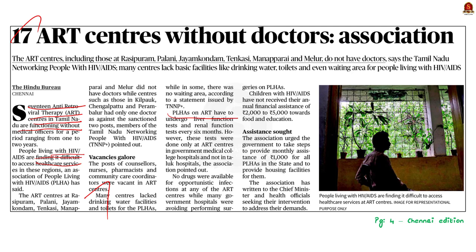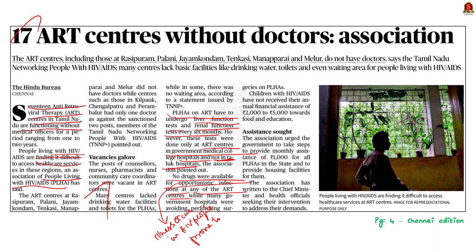People living with HIV or AIDS (PLHA) have to undergo liver function tests and renal function tests every six months. However, these tests are done only at ART centers in government medical college hospitals — taluk hospitals don't have these tests, which is an issue. There are no drugs available for opportunistic infections at any of the ART centers. Opportunistic infections are illnesses that occur more frequently and are more severe in people with HIV, because their damaged immune systems make them prone to infections. Additionally, many government hospitals are reluctant to perform surgeries on PLHAs, possibly due to social stigma.